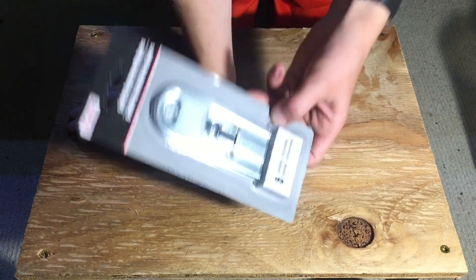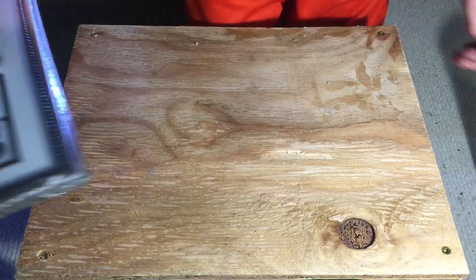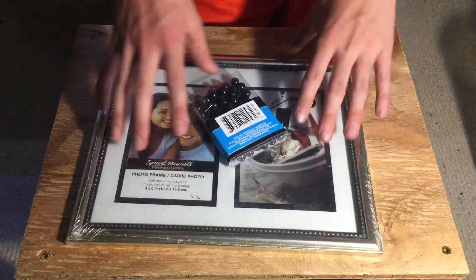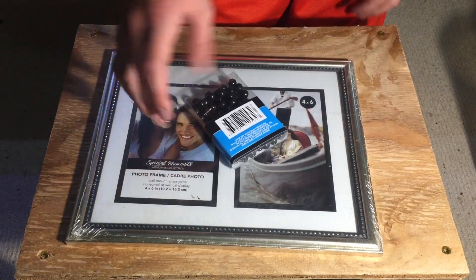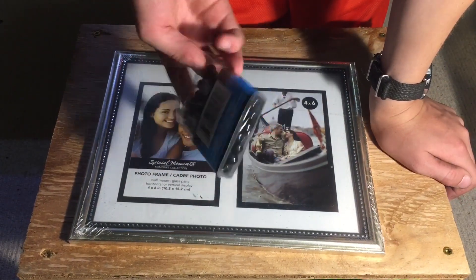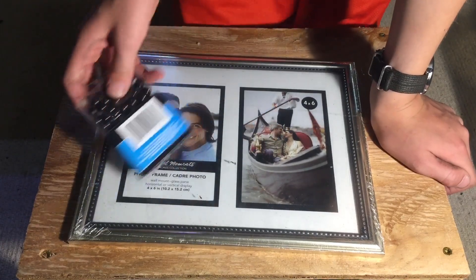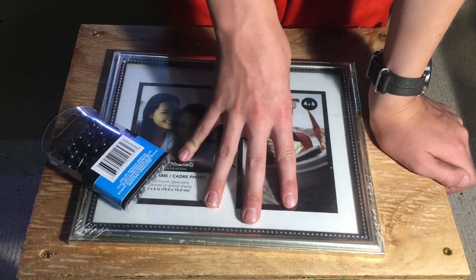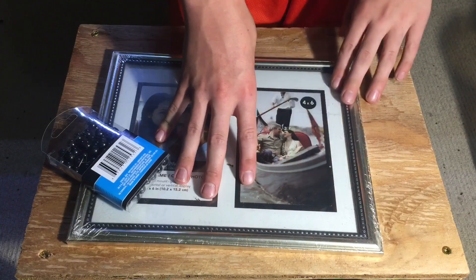These next items go together in conjunction. This is a picture frame and these are some tacks. What we're going to be doing is building a lid out of this actually. I'll show you guys how to do this in this video.